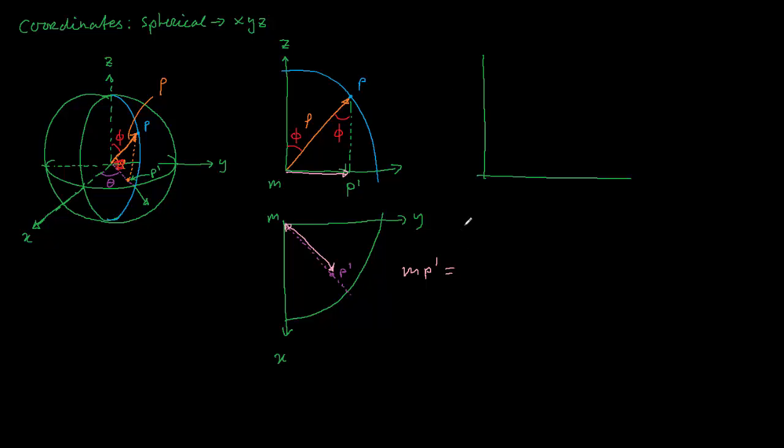So we have the sinus of phi is something like M P accent divided by rho, which gives us M P accent is rho times the sinus of phi. Okay, fill it in here, so this is rho times the sinus of phi.